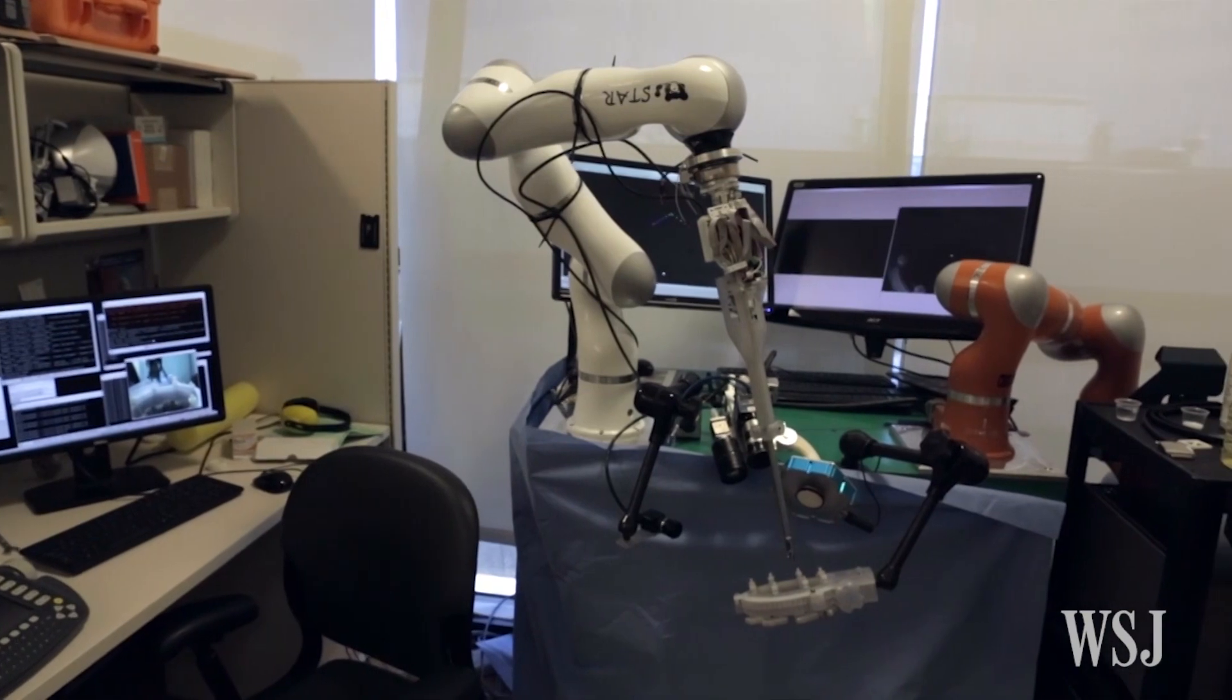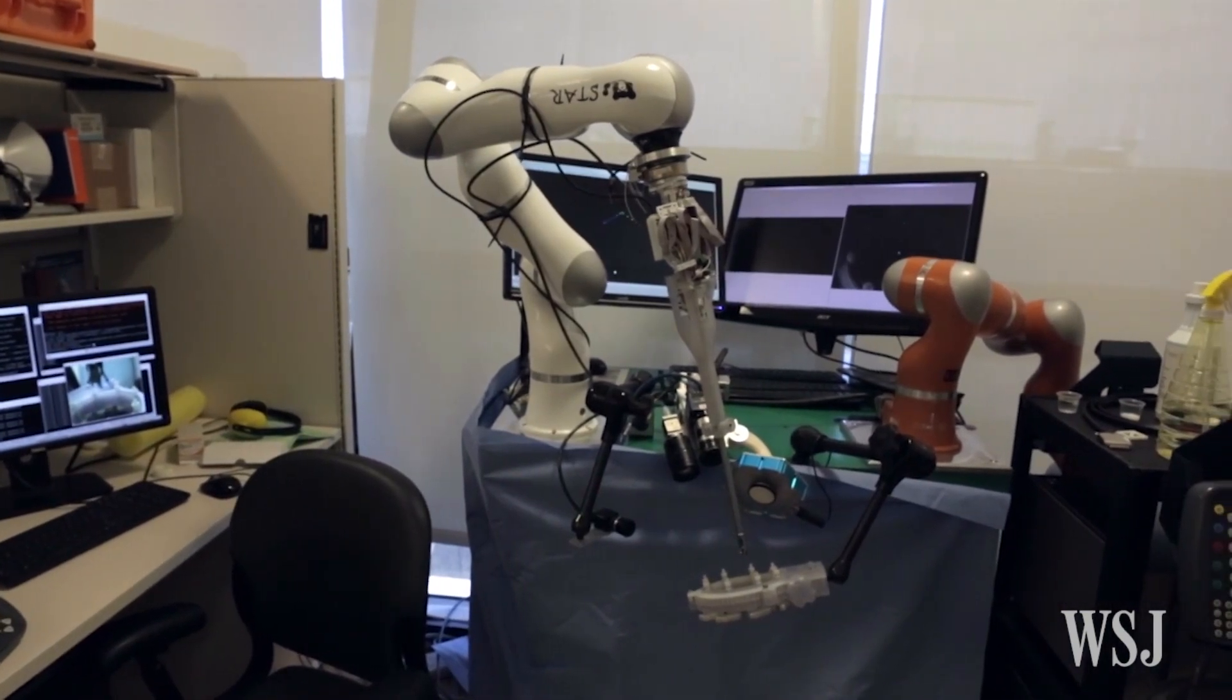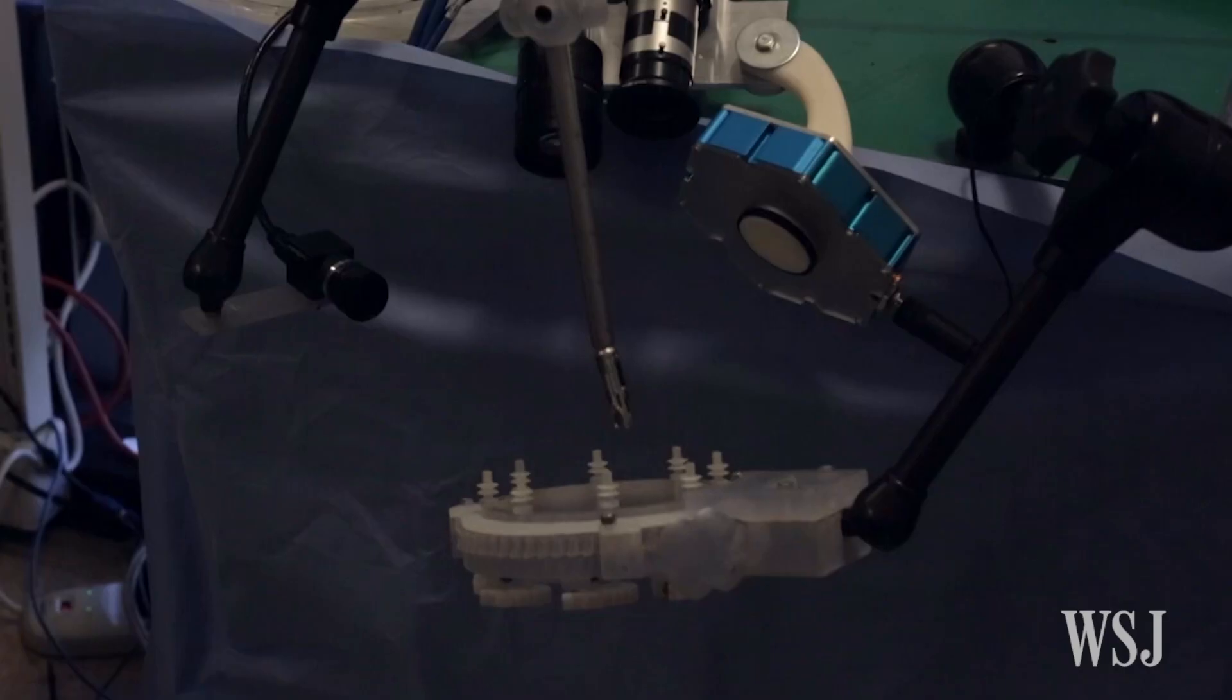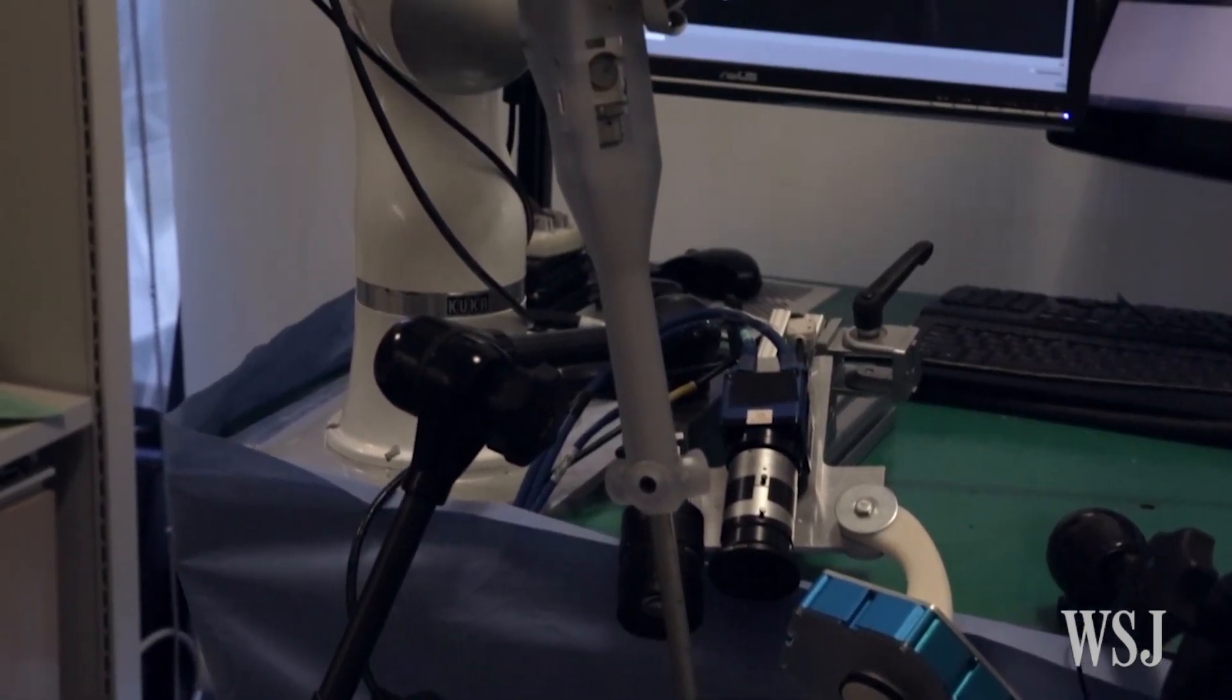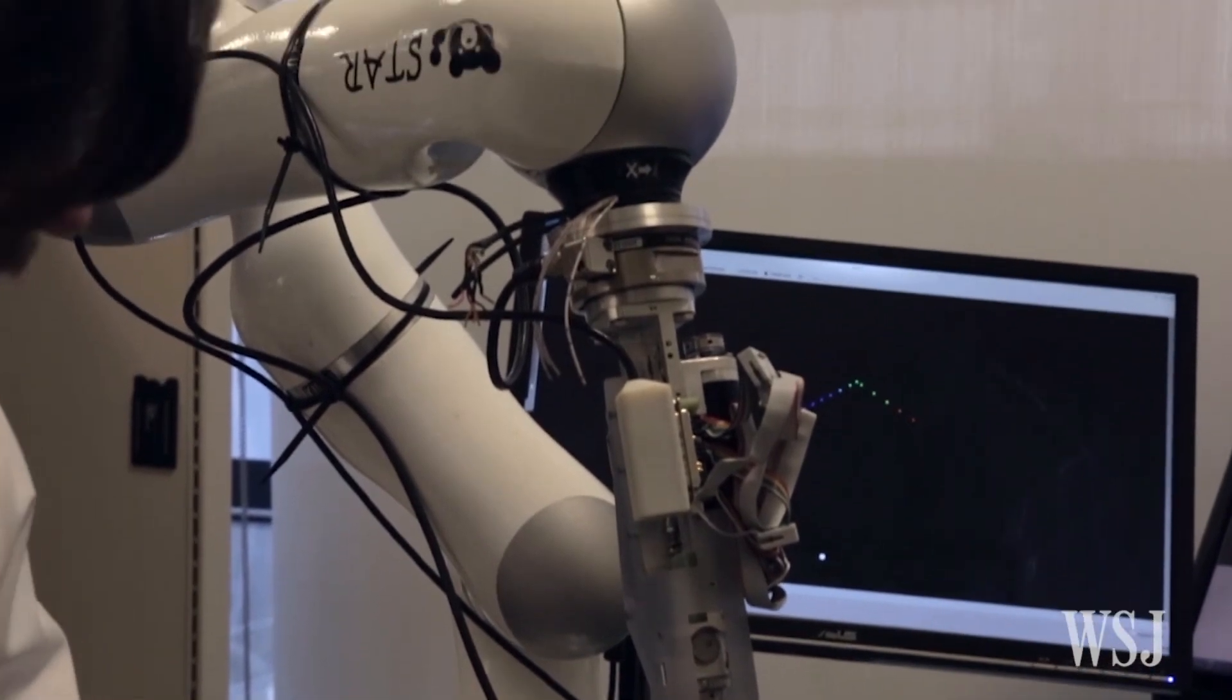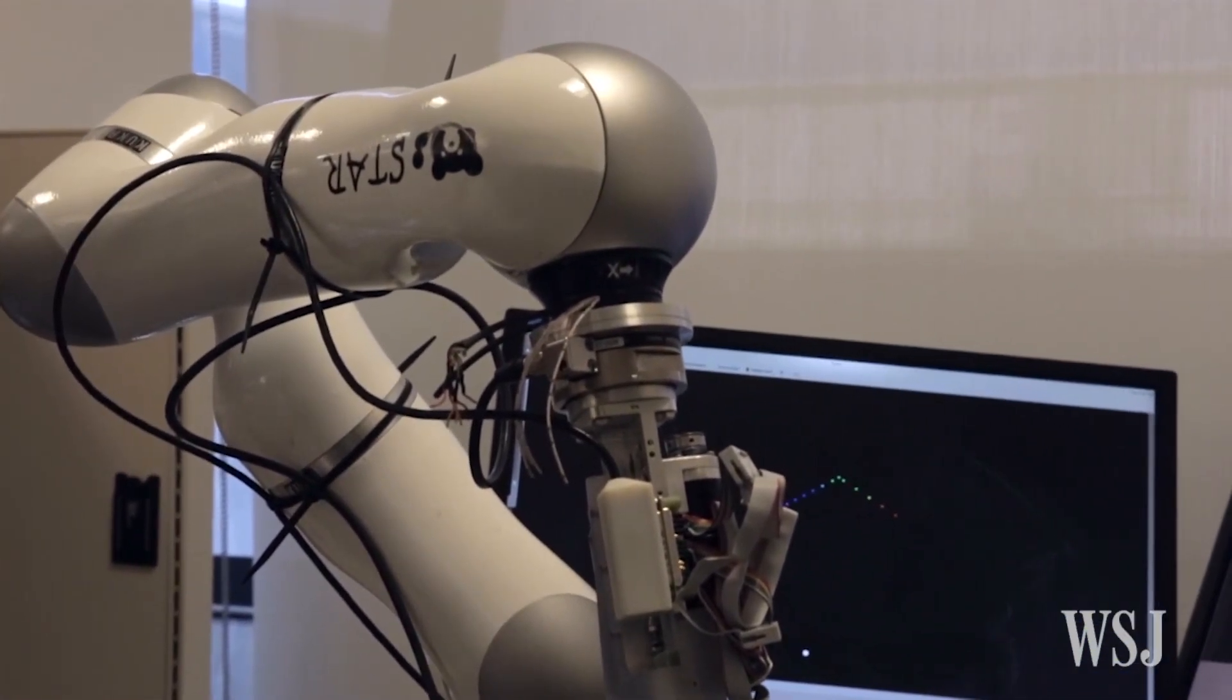The researchers designed and programmed STAR, the smart tissue autonomous robot. With robotic arms and surgical tools, STAR combines smart imaging technologies and fluorescent markers to navigate through soft tissue.